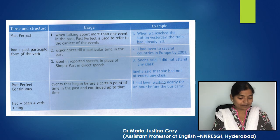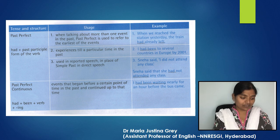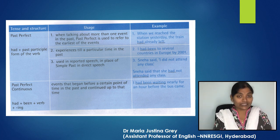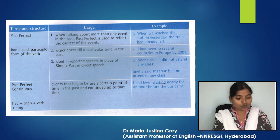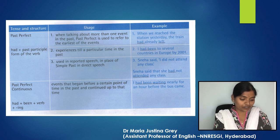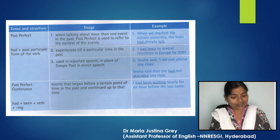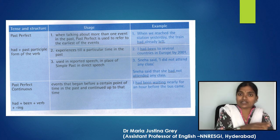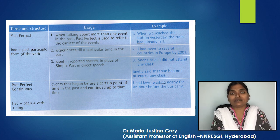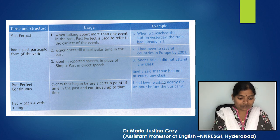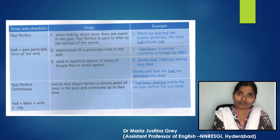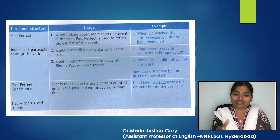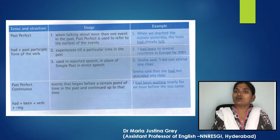Let's move to past perfect. To make a sentence with past perfect, we need 'had' plus the past participle form of the verb. We use past perfect when we talk about more than one event in the past — past perfect is used to refer to the earliest of the events. For example, 'When we reached the station, the train had already left.' Whatever happened first must take the past perfect form. The train left first, so: 'When we reached the station yesterday, the train had already left.'